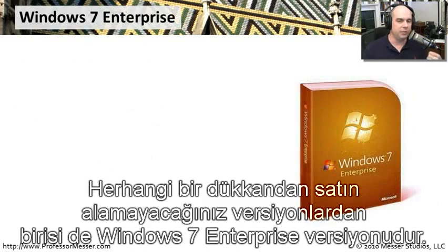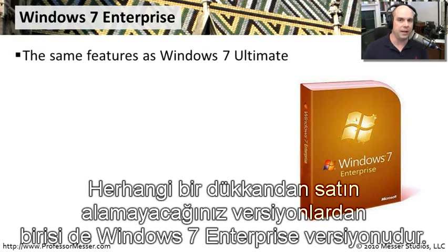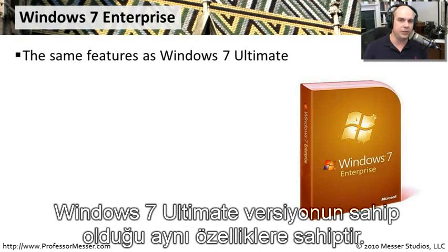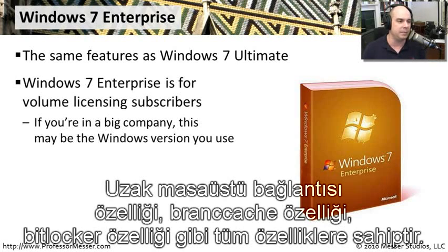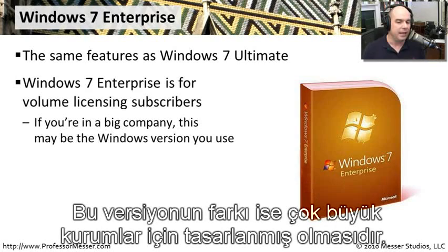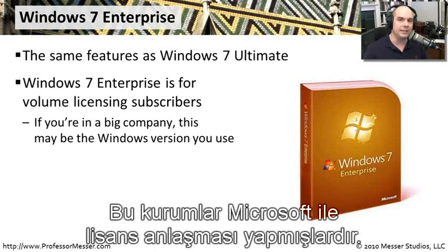A version you cannot buy off the shelf is Windows 7 Enterprise. It has exactly the same feature set as Windows 7 Ultimate — the same remote desktop, BranchCache, BitLocker, everything. The difference is that this version is designed for very large enterprises that already have a volume licensing agreement with Microsoft.